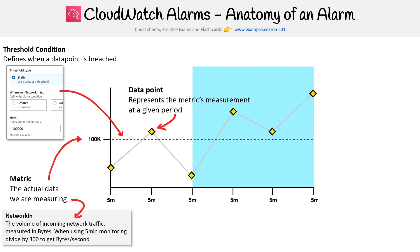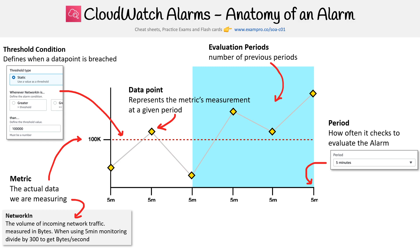So you have your data point - this represents the metric's measurement at a given period. Then you have the period, this is how often it checks to evaluate the alarm, which apparently is not true. It doesn't mean the data becomes available, it's actually always five minutes, I believe. But anyway, that's the period of data points will be collected.